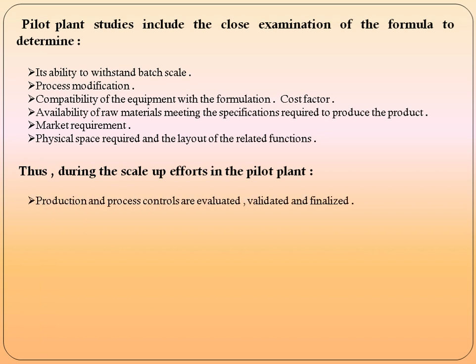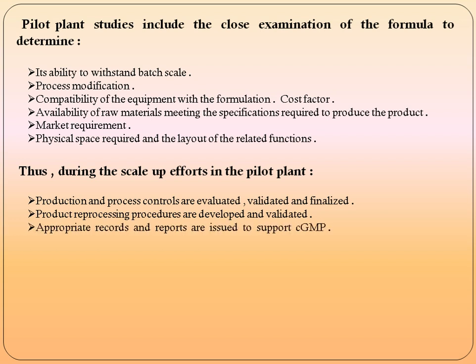During the scale-up effort in pilot plant, production and process control are evaluated, validated, and finalized. Product reprocessing procedures are developed and validated — in standard operating procedures, these processes are documented, and different process control parameters are identified, evaluated, validated, and finalized. For example, when producing tablets, you identify the process control parameters, evaluate, validate, and finalize them. Reprocessing procedures define how to reprocess if any problem arises in the formula.